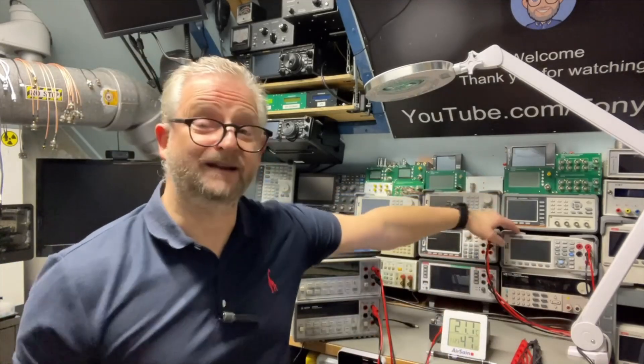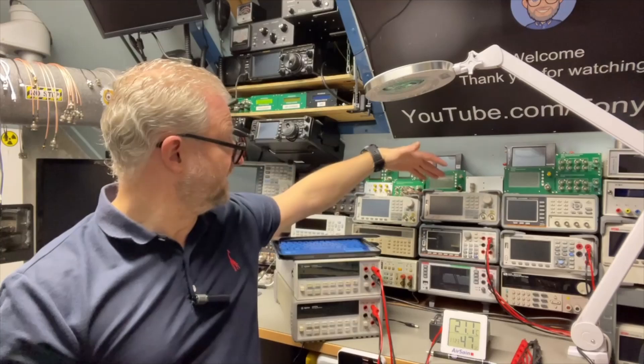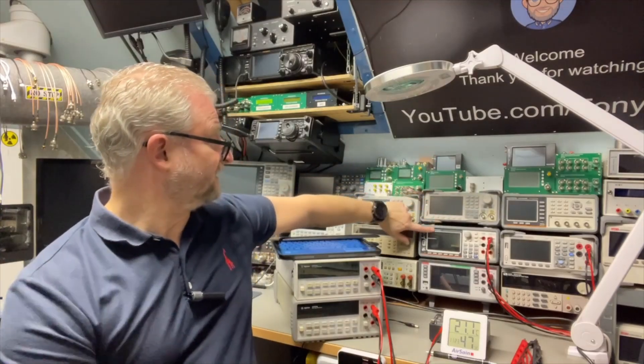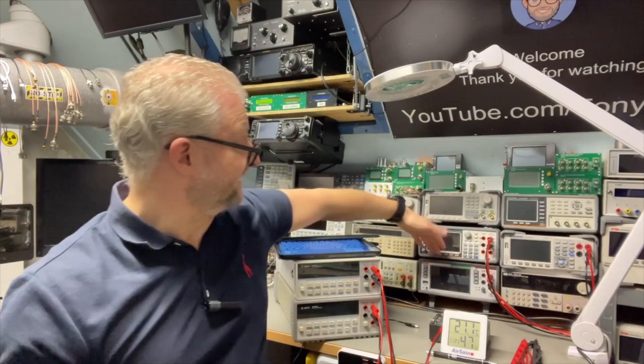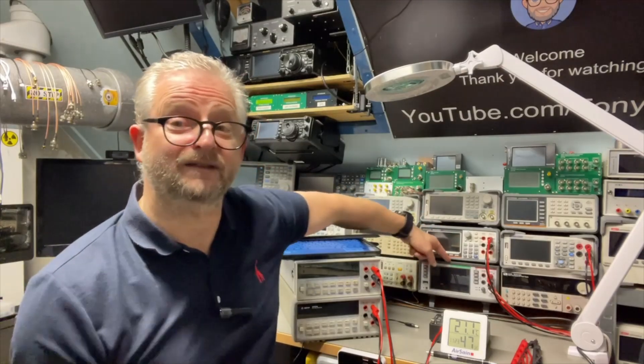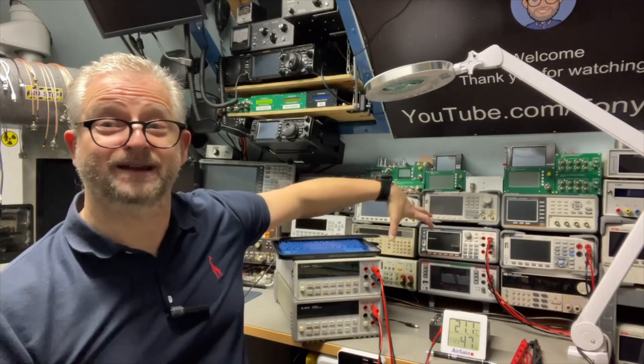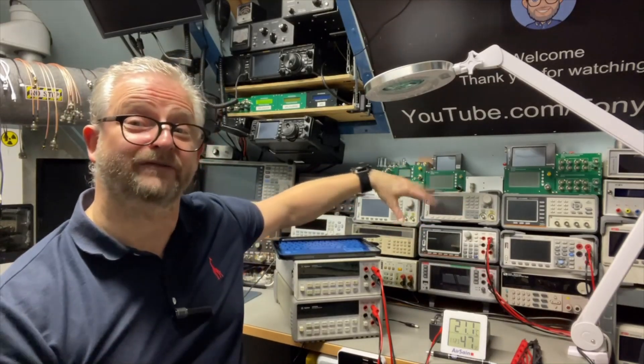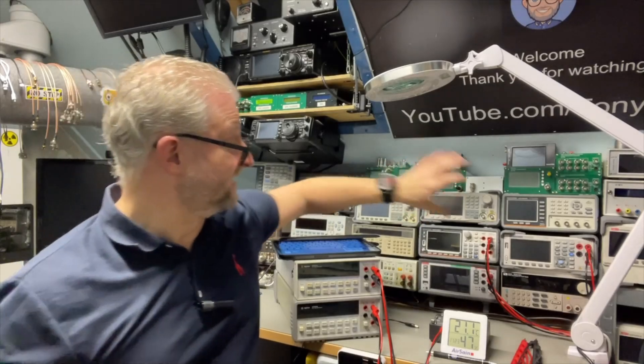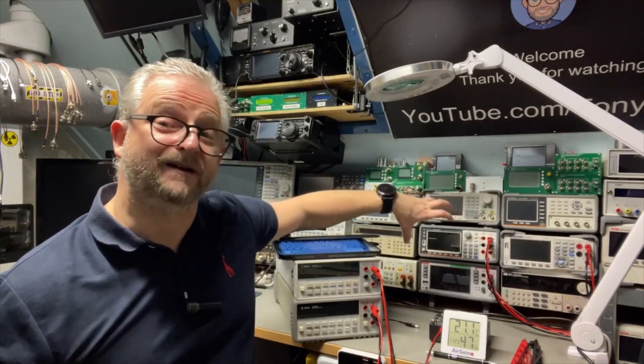Because you can buy the Siglent for around 800, 850 maybe. The GW Instek I have here, the 9061, I think it's around 1100. And the Keithley, it's very famous, the DMM6500. They started, I think at introduction, around 1200. But I think they are now already around 1500, 1600. So deciding between those, you really want to know if they are good or not.